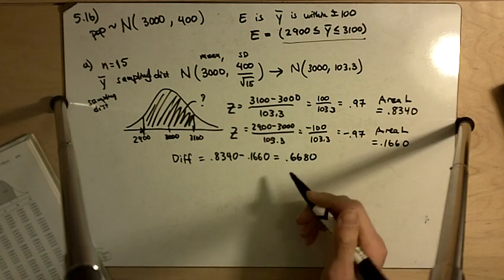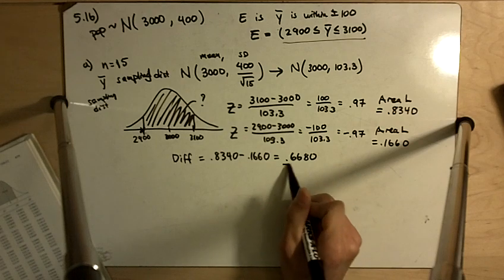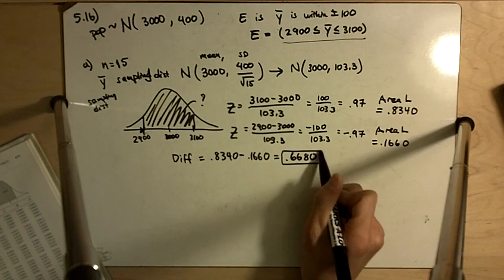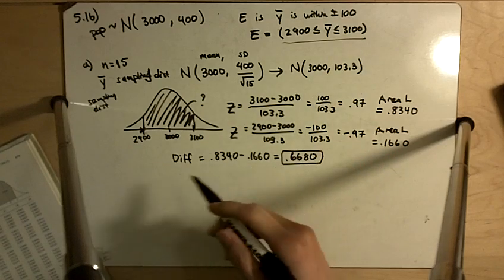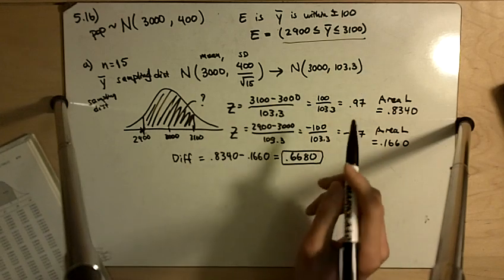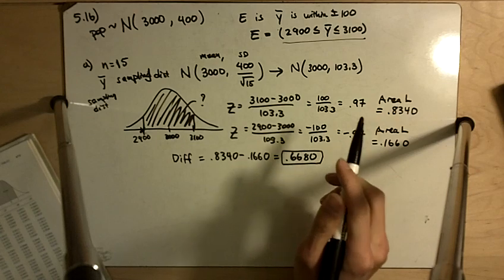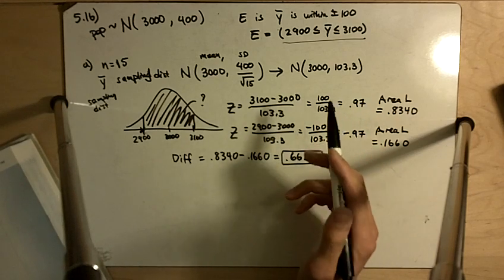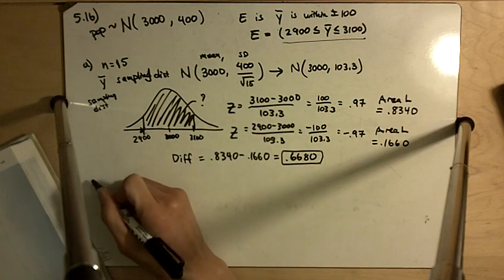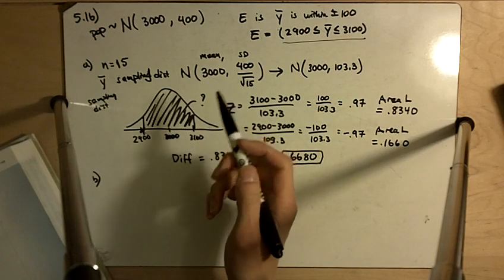So close to 68%, about 67%, are between 2900 and 3100. These are the sample means, so this is not an individual person, but this is the sample means of 15 people.